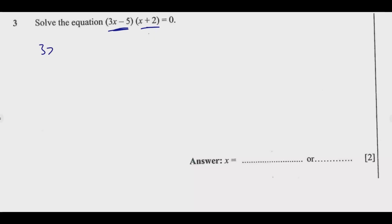So what we have: 3x - 5 = 0 or x + 2 = 0, because if any of these two is equal to 0, it will still be 0. Because if this is equal to 0, then 0 times anything is 0. Or if the other one is 0, this one times that one is 0.